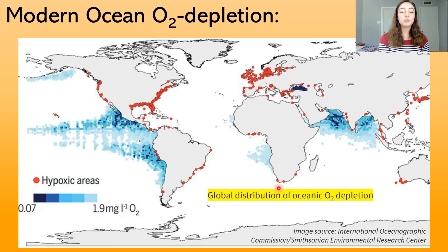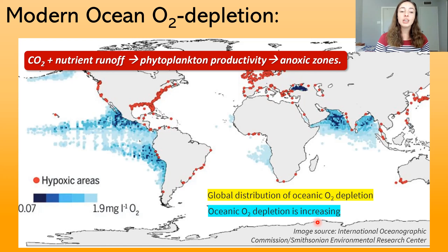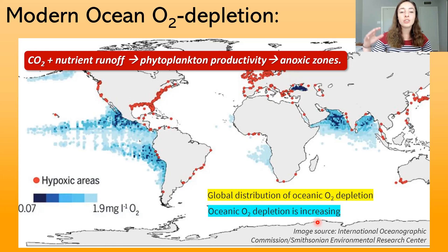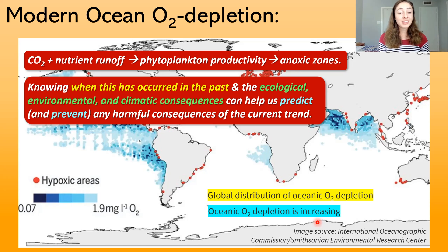On a map of global oxygen depletion, we can see oxygen-depleted zones in the open ocean and in coastal areas, and the current trend is actually toward oxygen depletion — our ocean today is becoming more oxygen-depleted. The increase in CO₂ and nutrient runoff from human activities increases phytoplankton productivity in the surface ocean, which increases the production of anoxic zones beneath phytoplankton blooms where oxygen is heavily depleted. Knowing when anoxic events occurred in the past can help us understand the ecological, environmental, and climatic consequences and maybe help us predict and prevent harmful consequences from the current oxygen-depletion trend.